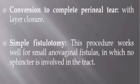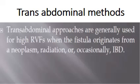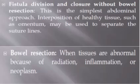Simple fistulotomy works well for small rectovaginal fistulas in which no sphincter is involved in the tract. Transabdominal approaches are generally used for high rectovaginal fistulas when the fistula originates from neoplasm, radiation, or occasionally inflammatory bowel disease. Fistula division and closure without bowel resection is the simplest abdominal approach. Interposition of healthy tissues such as omentum may be used to separate the suture lines. Bowel resection is also an option when tissues are abnormal due to radiation, inflammation, or neoplasm.